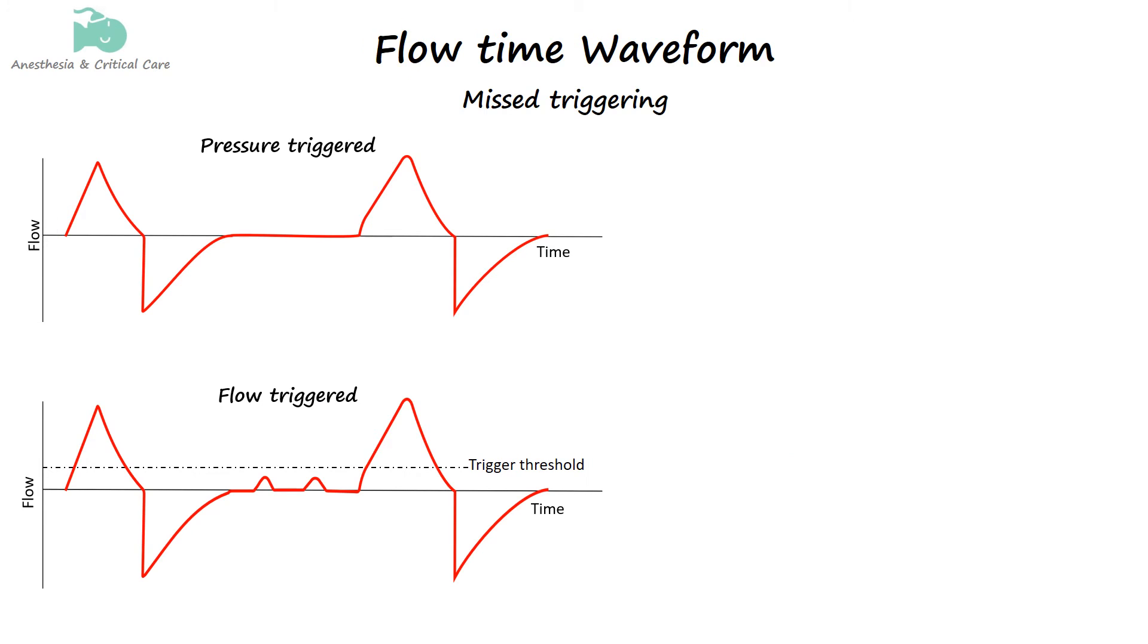Missed triggering occurs when the ventilator fails to detect or respond to the patient's spontaneous breath attempts. If the ventilator is pressure-triggered, the flow-time waveform will show a persistent flat baseline after expiration with no changes in flow despite the patient's respiratory efforts. The patient's respiratory effort will be visible as a negative deflection on the pressure-time waveform.